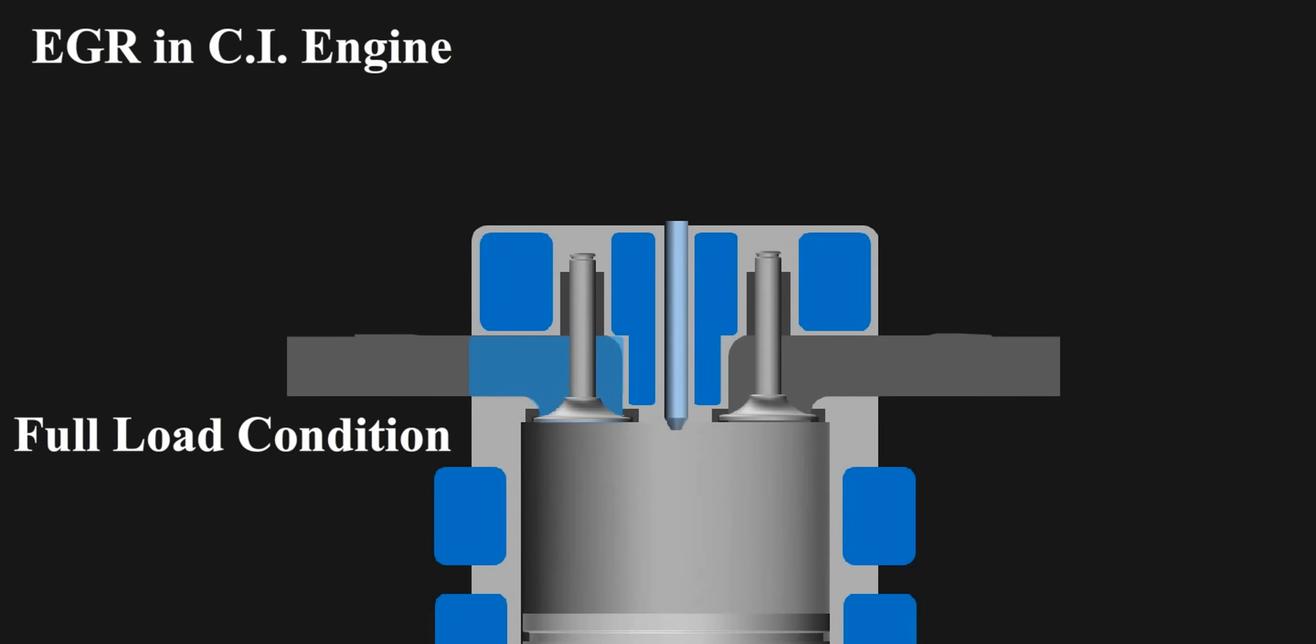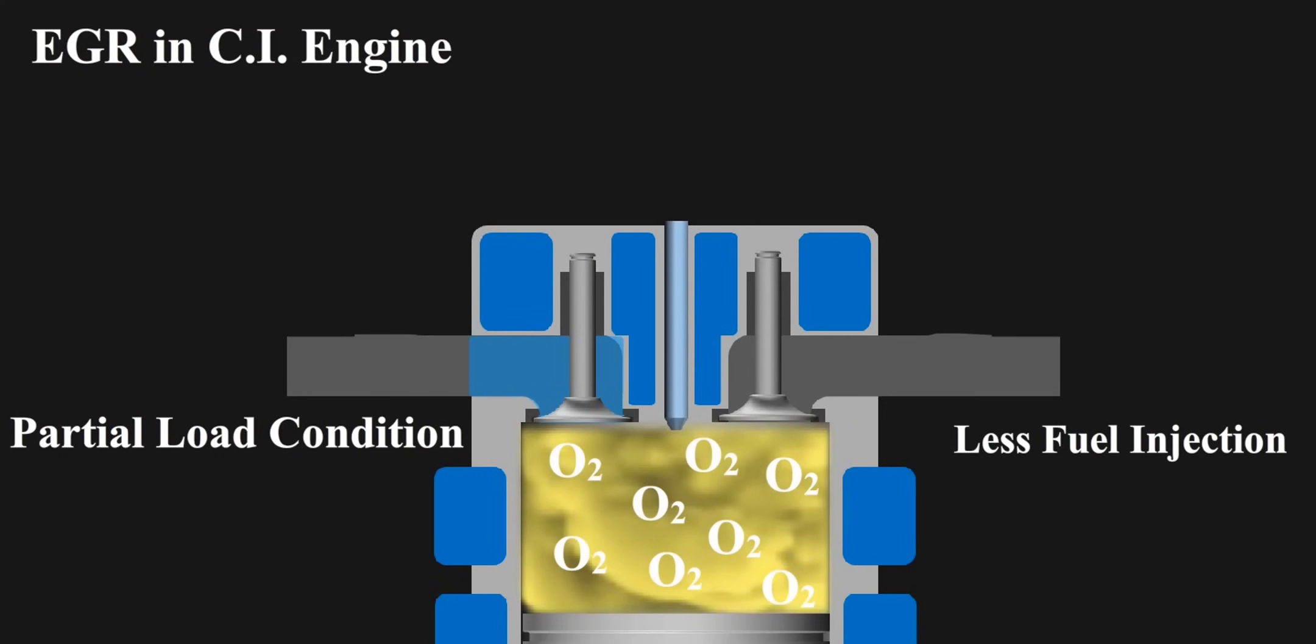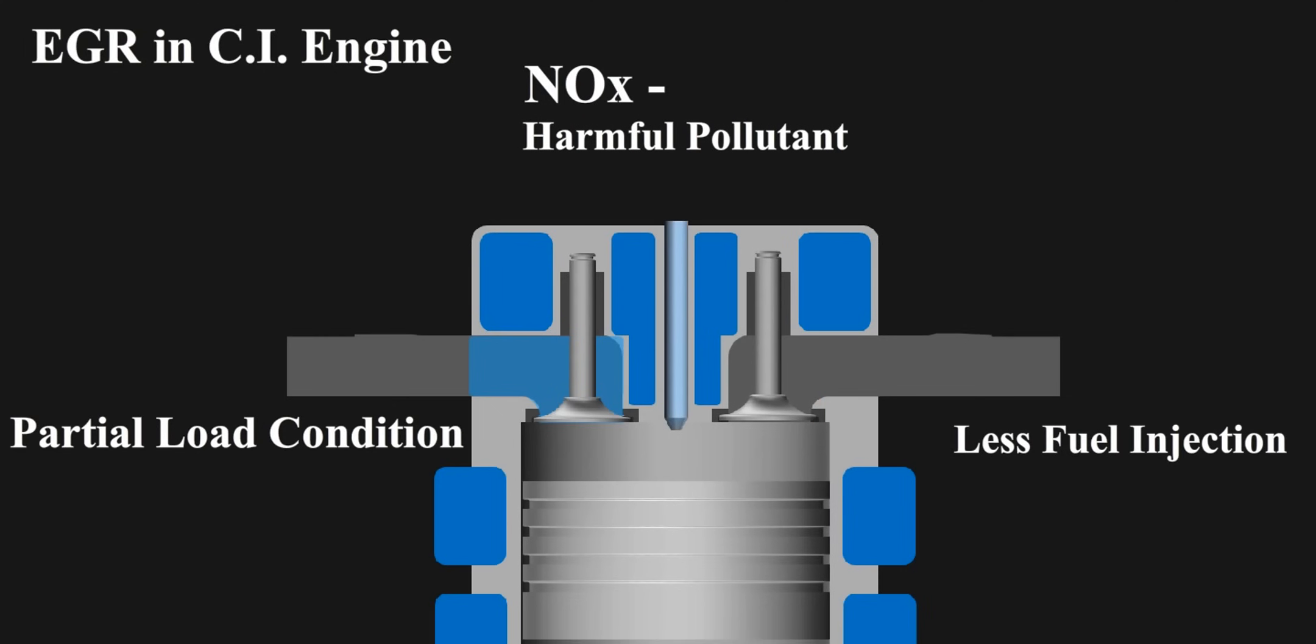All of this is okay for full load conditions because all of the oxygen inside gets used up for burning the fuel. But the problem comes when the engine is at partial load condition. At partial loads, the power requirement is less. Hence, we inject less fuel which is obvious as there is no need to waste more of it. But this creates a problem. In cylinder, we have lot of oxygen which is sufficient to burn lot of fuel. But at partial load, as we inject less fuel, all of the oxygen inside is not utilized.